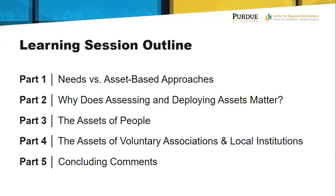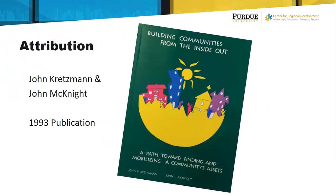First, we'll talk about needs versus asset-based approaches. Then we'll talk about why deploying assets matters. Then we'll get into a discussion about some of the areas in which you can deploy — or at least identify and then deploy — assets. We're looking at people, voluntary associations, and local institutions. I'll then conclude with a few comments for you to consider as you do this kind of work in the communities you represent. I also want to give attribution to John Kretzmann and John McKnight, both from Northwestern University, who were instrumental in building this whole asset-based community development approach. In 1993, they published a document called Building Communities from the Inside Out, which has really changed the whole mindset about how we do community development work. I encourage you to look up this publication — my understanding is that it's now available free for download.